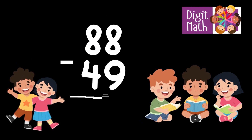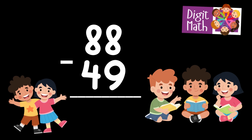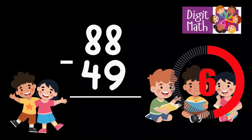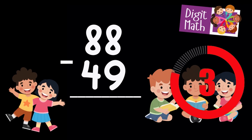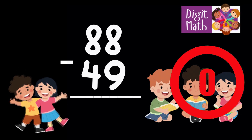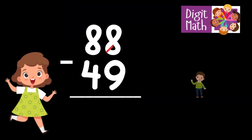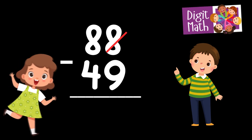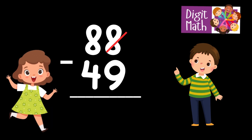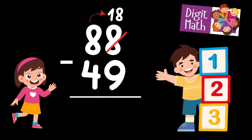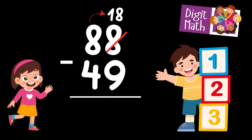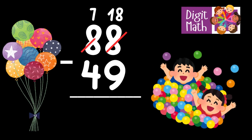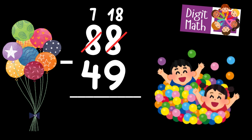88 minus 49 is... Time to think. In the Units column, we have 8 minus 9. Since it's not possible to subtract 9 from 8, we need to borrow from the Tens column. In the Tens column, we have 8. We take 1 from the Tens, leaving 7 in the Tens column and turning the Units column into 18.